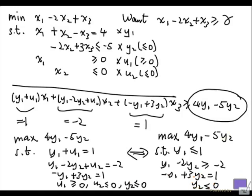If we find a y1 and a y2 that satisfy all these constraints, then we can get values for u1 and u2 such that u and y satisfy all these constraints. And together, that will give us a lower bound, 4y1 - 5y2, for the optimal value of the original problem, provided that the problem has an optimal solution. And in fact, this is the dual problem of the problem that we started with.